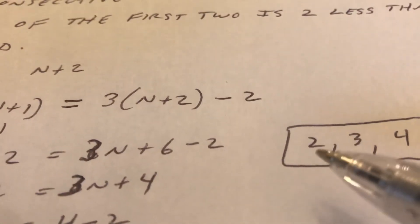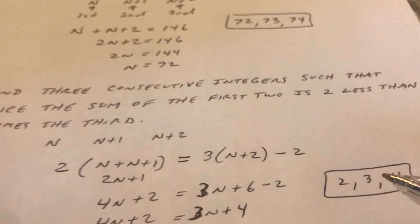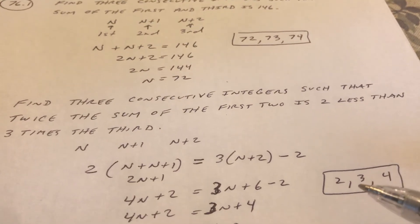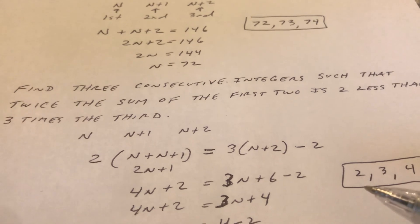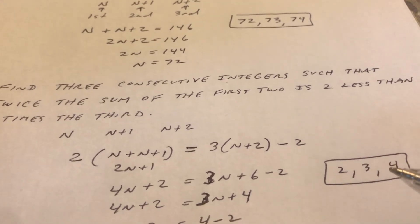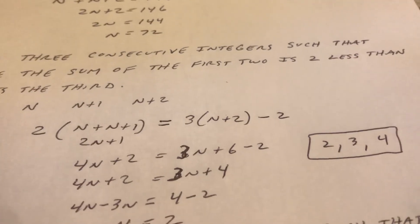So my three consecutive integers are 2, 3, and 4. And then you can check the work. The sum of the first two is 5. So that gives you twice is 10. And the third, three times the third is 12, two less than. You know your answer is correct.